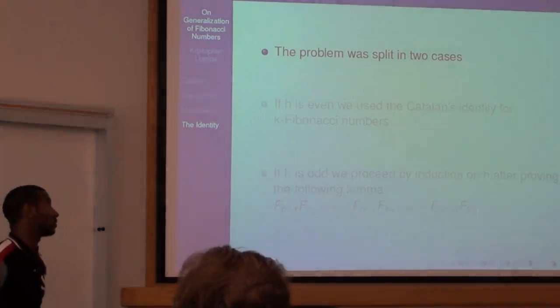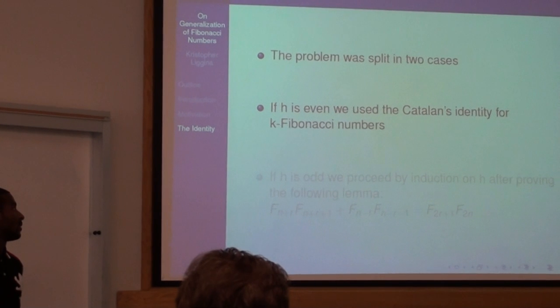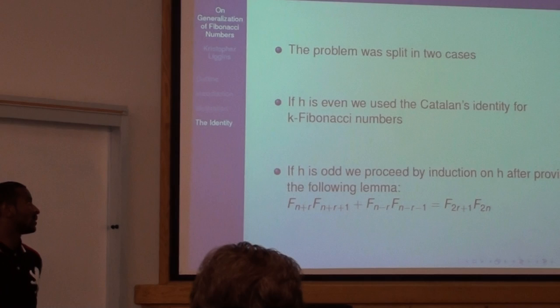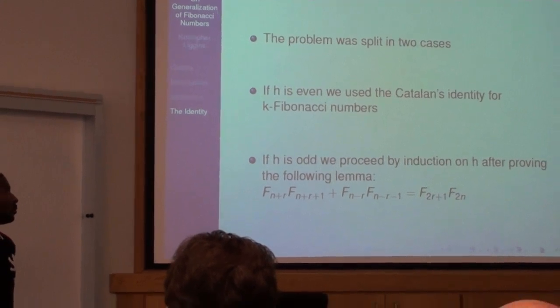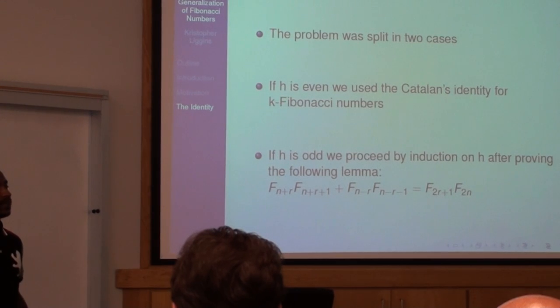The problem is split into two cases. When H is even, we use the Catalan identity for k-Fibonacci numbers. When H is odd, we prove it by induction after H.